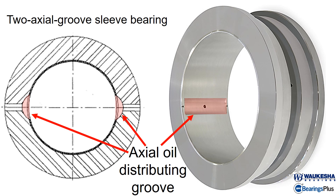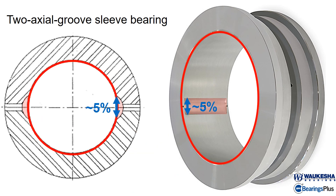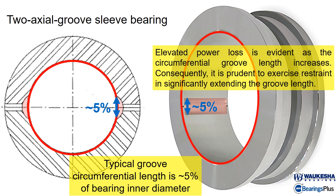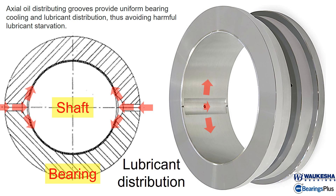Two axial groove sleeve bearings have oil distribution grooves. Typical groove circumferential length is 5% of the bearing inner diameter. Two wide groove lengths could induce an increase in power loss, so it is important to have an optimum groove length. These oil grooves provide uniform bearing cooling and lubricant distribution.